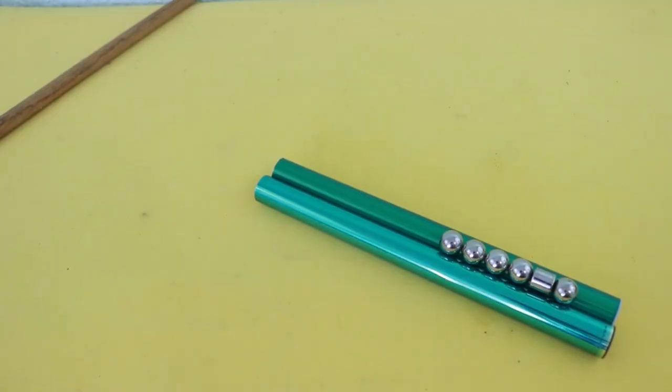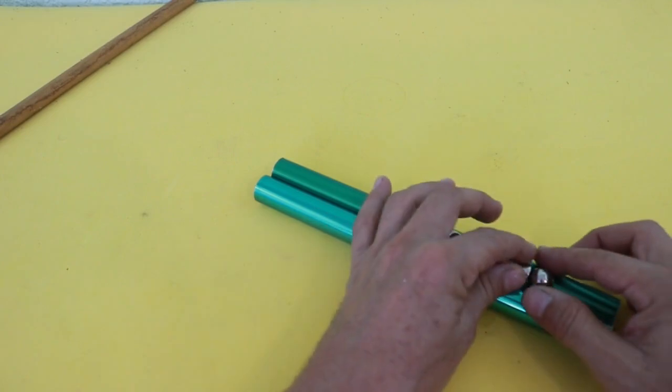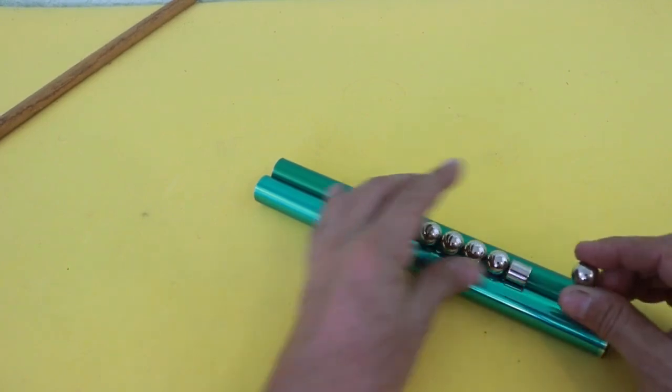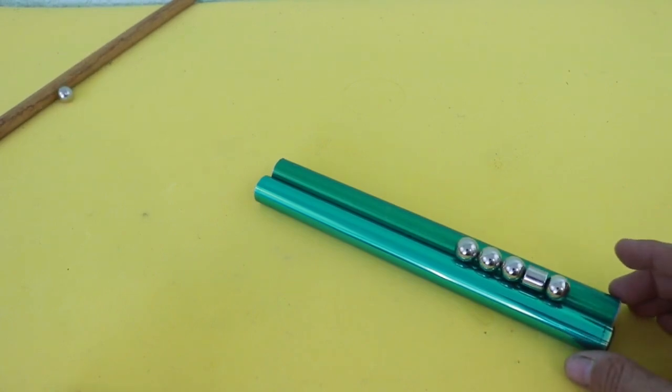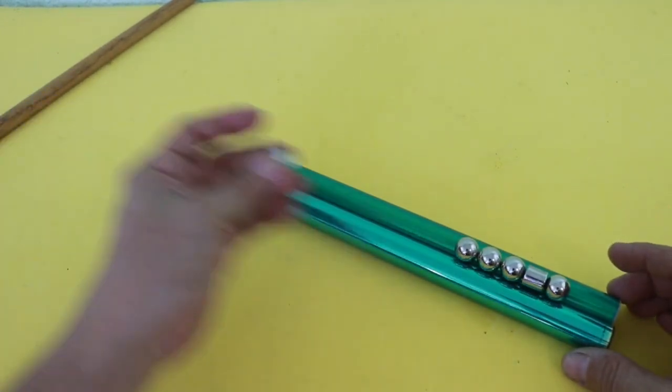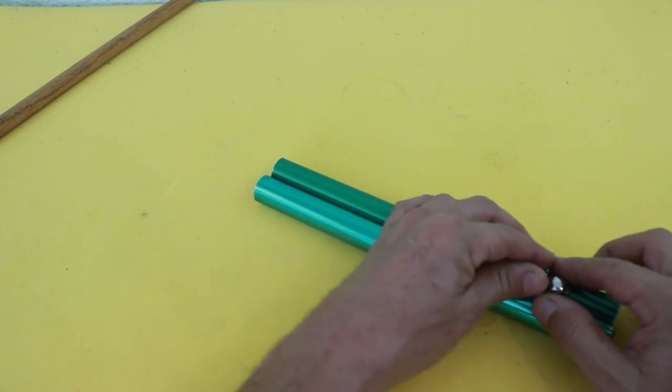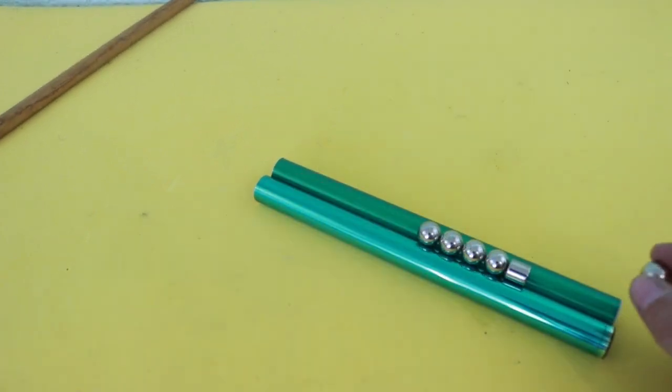Let's see how it works. I'm going to pull this steel ball at the left and let it run and you can see that the ball at the other end is expelled at higher speed.